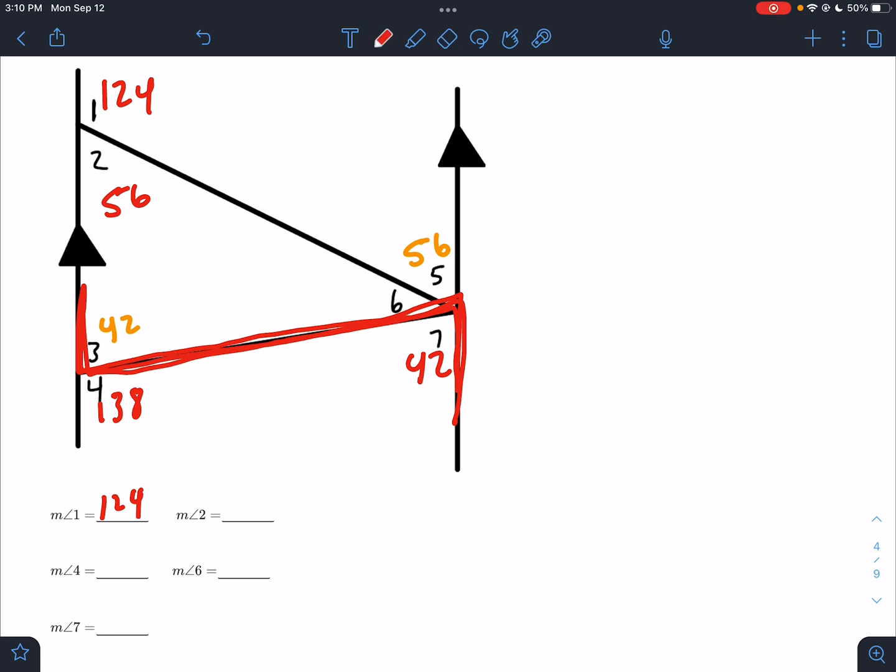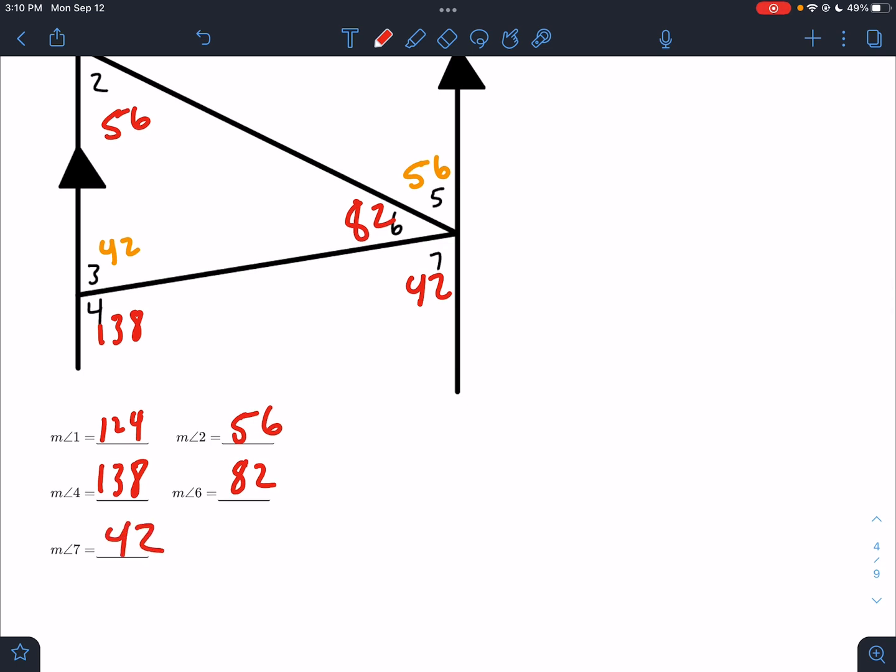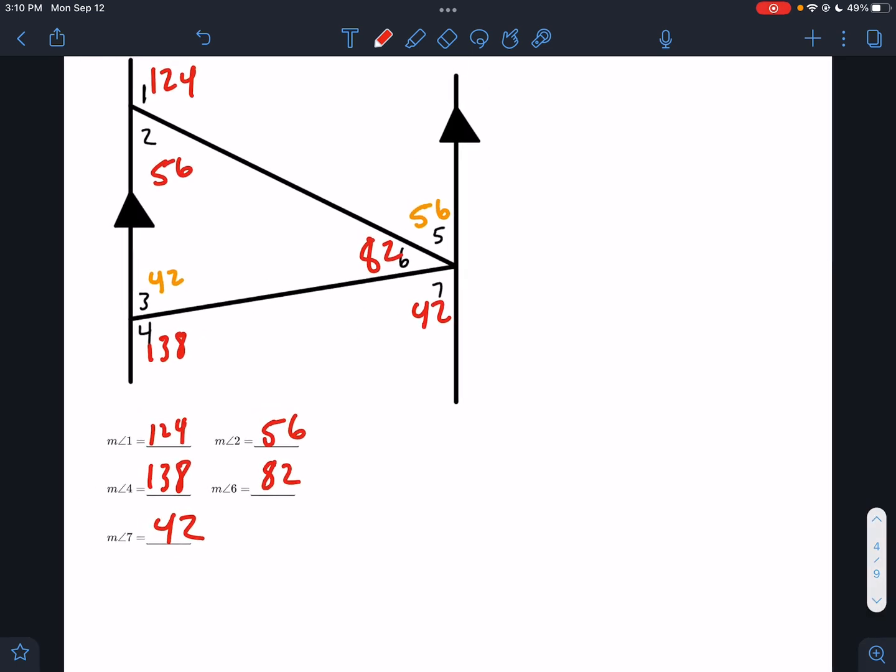So if you remember, the letter Z, alternate interior angles, they're going to be equal if the lines are parallel. The letter C, same side interior angles, are going to be supplementary if the lines are parallel. And then angle 6 here, there's a few ways to get it. But you could look at these three angles. They have to add up to 180. 56 plus 42 is going to be 98, so that would have to be 82. So angle 2 is coming in at 56, angle 4, 138, angle 6, 82, and angle 7, 42. Looking great.